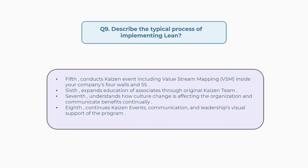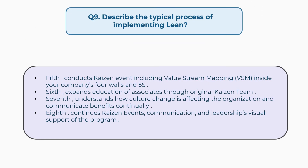Fifth, conducts Kaizen event including value stream mapping, VSM, inside your company's four walls and 5-S. Sixth, expands education of associates through the original Kaizen team. Seventh, understands how culture change is affecting the organization and communicates benefits continually. Eighth, continues Kaizen events, communication, and leadership's visual support of the program.